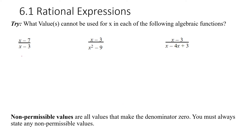Let's solve them now. For x minus three: set it equal to zero, add three to both sides, and you find that positive three would be your non-permissible value.